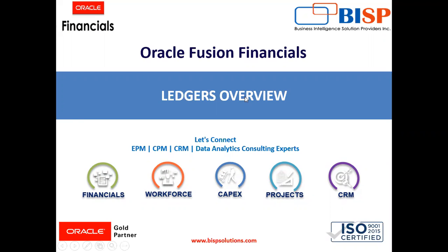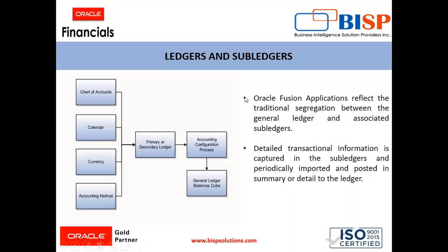In Oracle Fusion applications, we work in the general ledger and the subledger applications. Oracle Fusion applications reflect the traditional segregation between the general ledger and the associated subledgers. The subledgers can be accounts payable, accounts receivable, cash management applications and many others, in which specific transactions are recorded, and in the general ledger, the adjustment entries or periodic adjustments are posted. The detailed transaction information is captured in the subledgers and periodically imported and posted in summary or detail to the ledgers.